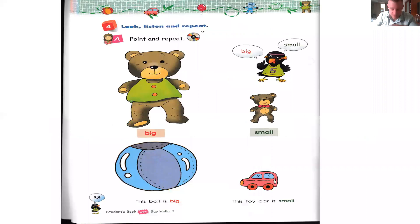Okay, so you repeat after me. First, we will speak about sizes. Big, small. Big, small. This ball is big. This toy car is small.